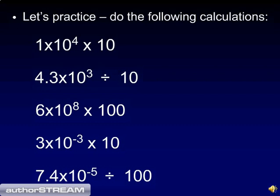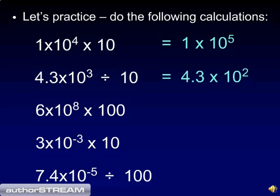Let's finish up with some more practice problems. To multiply 1 times 10 to the fourth times 10, you simply need to add 1 to the exponent to get 1 times 10 to the fifth. To divide 4.3 times 10 to the third by 10, you subtract 1 from the exponent, giving 4.3 times 10 to the second. For 6.10 times 10 to the eighth times 100 — since this is two tens, you want to add 2 to the exponent, and this becomes 6 times 10 to the tenth.